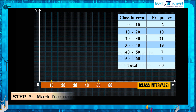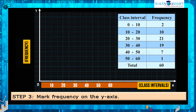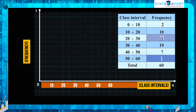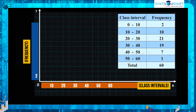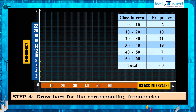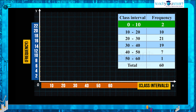On the y-axis we represent the corresponding frequencies. Here the minimum value of frequency is 1 and the maximum value of frequency is 21. So for convenience we take the points on the y-axis as 2, 4, 6, 8, 10, 12, 14, 16, 18, 20, and 22.